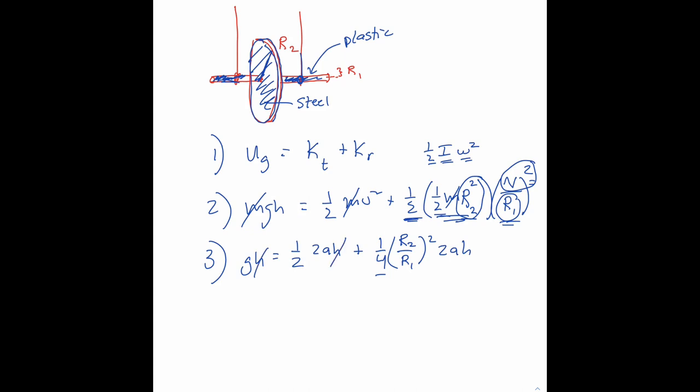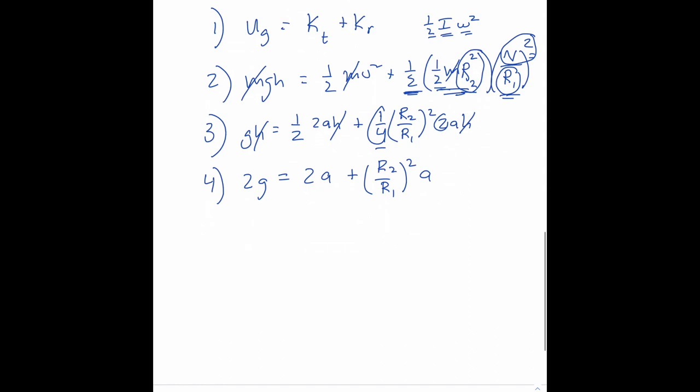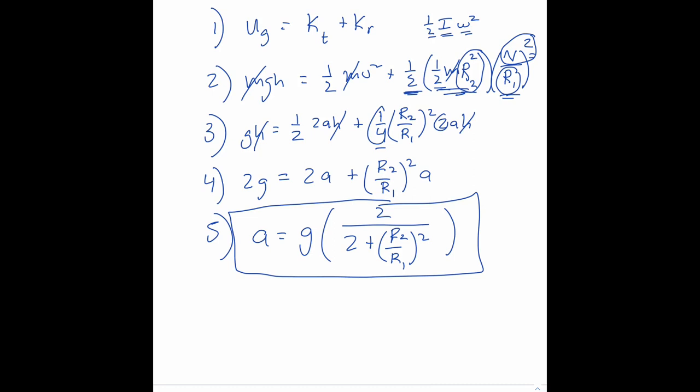If I multiply both sides of the equation by 2, I get 2g is equal to 2a plus, one-fourth times 2 would give me one-half, but I'm multiplying every term by 2, so I'm just left with r2 over r1 quantity squared times a. So we can factor out the a and rearrange, and it looks like a would be equal to g times 2 over 2 plus r2 over r1 quantity squared. So let's box that up and call that the acceleration of Maxwell's wheel.